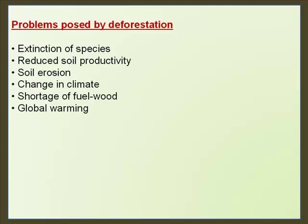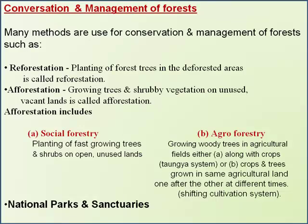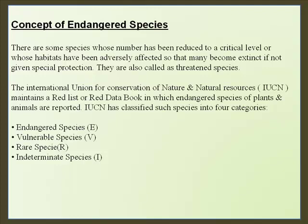Problems posed by deforestation include extinction of species, reduced soil productivity, soil erosion, change in climate, shortage of fuel wood, and global warming. Conservation and management of forests involves methods such as reforestation—planting forest trees in a deforested area—and afforestation—growing trees and shrubby vegetation on unused vacant lands—which includes social forestry, planting of fast-growing trees and shrubs on open unused lands, agroforestry, and shifting cultivation systems. National parks and sanctuaries also play a role.